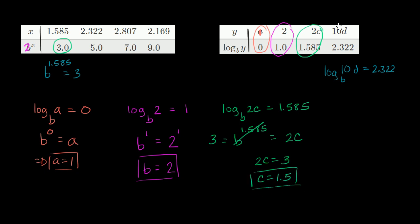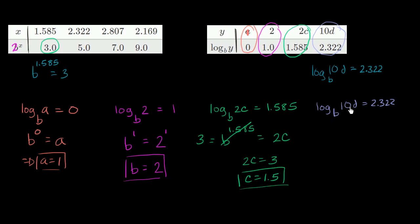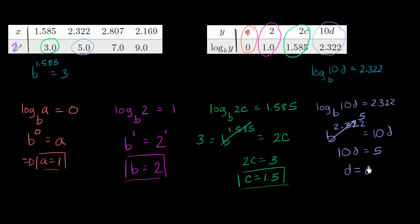And now we have this last column, which I will circle in purple. We can write this as log base b of 10d is equal to 2.322. So in exponential form, b to the 2.322 is equal to 10d. Now what is b to the 2.322? Well they tell us over here that b to the 2.322 is 5. So we can write 10d is equal to 5. Dividing both sides by 10, d is equal to 0.5. And we're done — we were able to figure out what a, b, c, and d are without the use of a calculator.